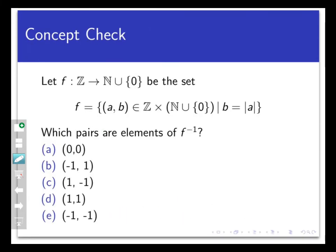Let's check our understanding of the concept of inverses with a concept check. Let F be the function defined by the following set of ordered pairs. F is the set of all pairs (a,b) in Z cross (N union {0}), that's the set of all natural numbers and throw in 0, defined by b equals the absolute value of a. So it's a set of all ordered pairs where a belongs to the integers, b is either a natural number or 0, and b is the absolute value of a. Which of the following pairs are in F inverse? So look at that list and select all that apply. And for bonus brownie points, you can answer the following question, yes or no: Is F inverse a function in its own right?